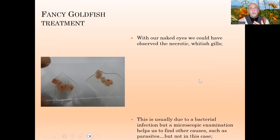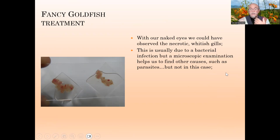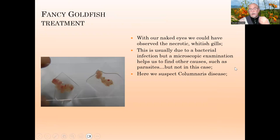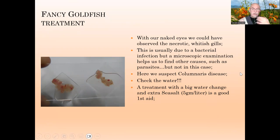We observed the necrotic whitish gills. Usually in most cases like this, it's due to a bacterial infection and the microscope helps you find the cause. Maybe parasites are also involved, but not in this case. We suspect Columnaris disease. For Columnaris, first check the water quality — I recommend doing a big water change and then adding a good amount of sea salt, five grams per liter, which is a very good first aid when the gills are so badly damaged and it controls the bacterial outbreak.